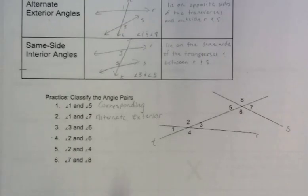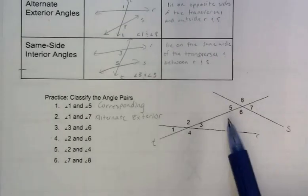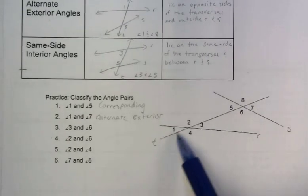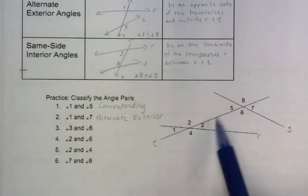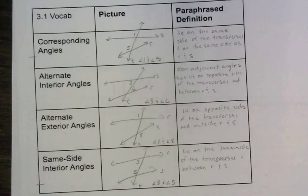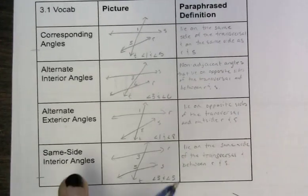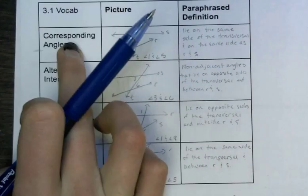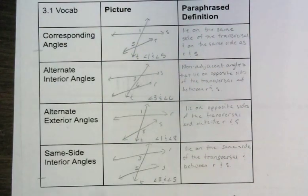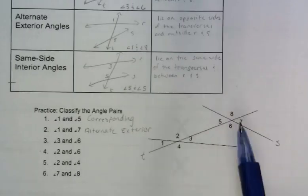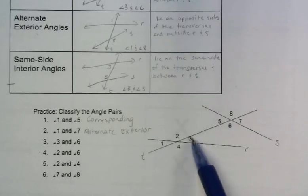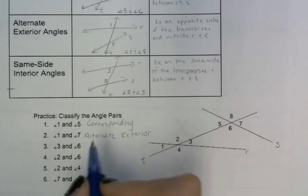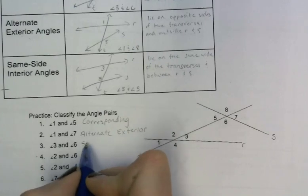Next pair is angles 3 and 6. Comparing them to the transversal first — they're on the same side. Looking at my same-side options, they are both inside R and S, so that makes them same side interior.